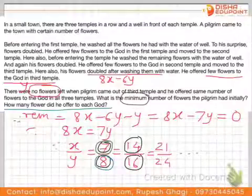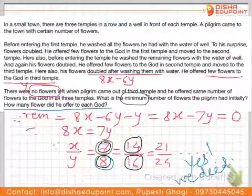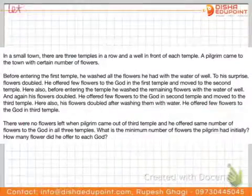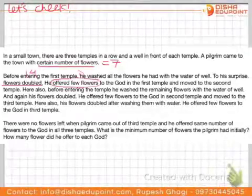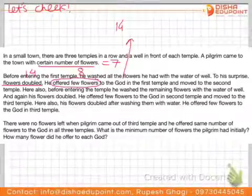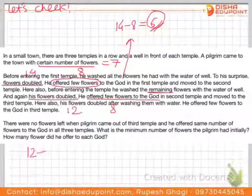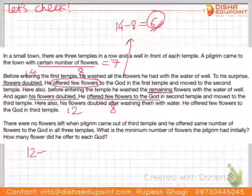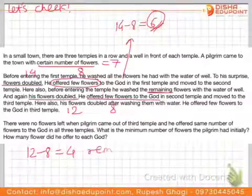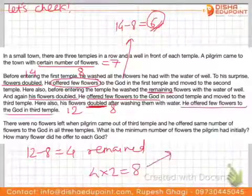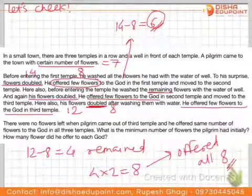Let's verify. He started with 7 flowers. They doubled to 14; he offered 8, leaving 6. Those 6 doubled to 12; he offered 8, leaving 4. Those 4 doubled to 8; he offered 8, leaving 0. Our solution is correct.